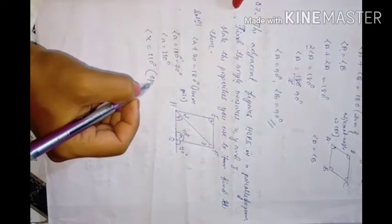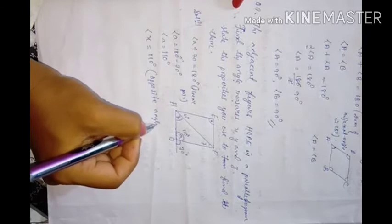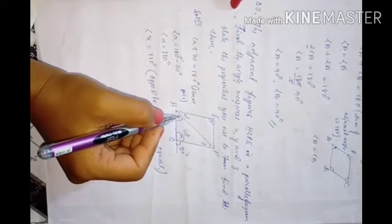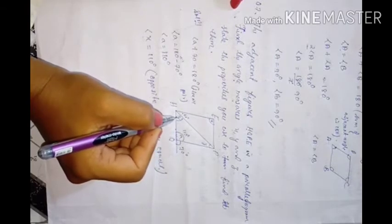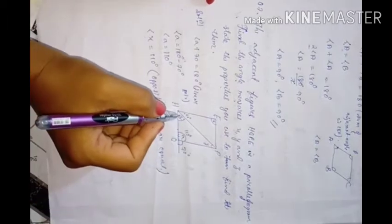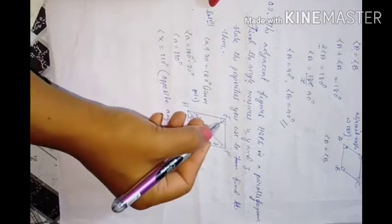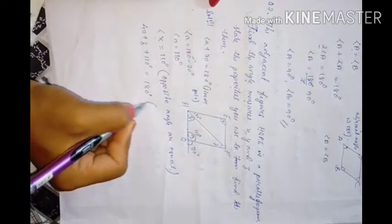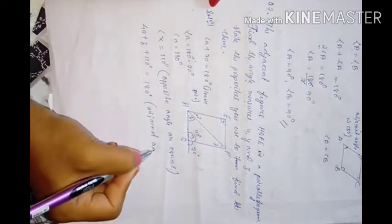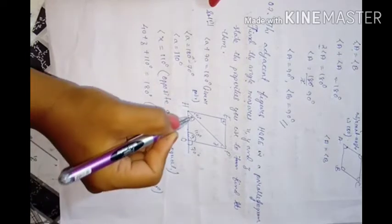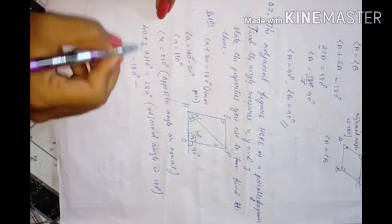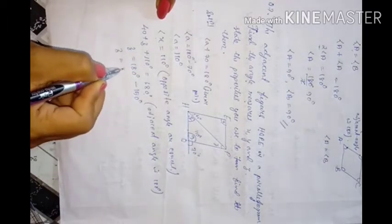Since HOPE is a parallelogram, x equals angle a equals 110 degrees by opposite angles. The two adjacent angles (40 plus z) and 110 degrees sum to 180 degrees. So 40 plus z plus 110 equals 180 degrees, giving z equals 30 degrees.